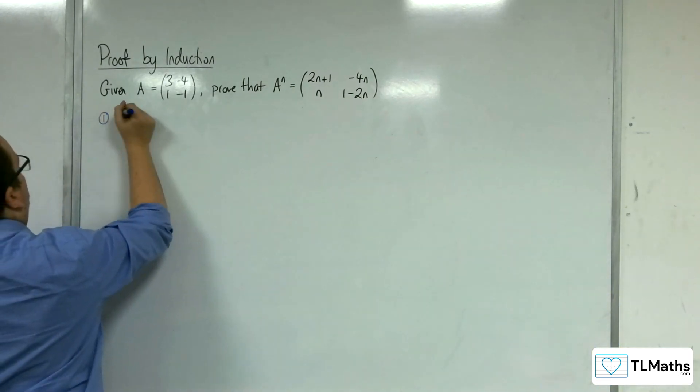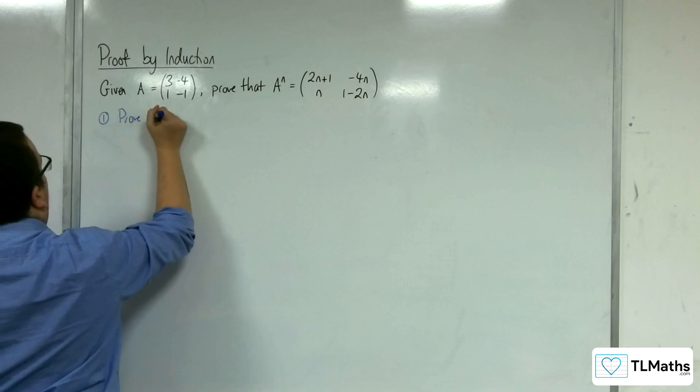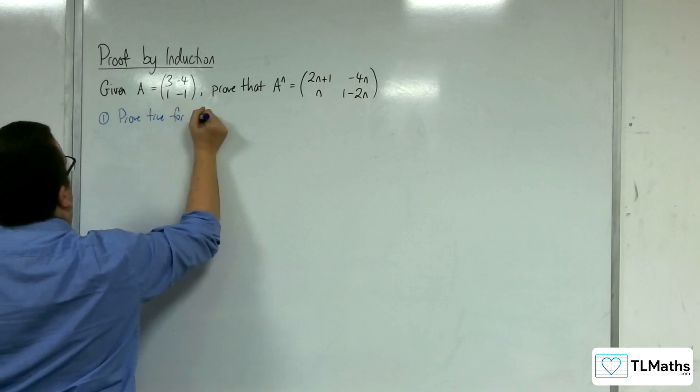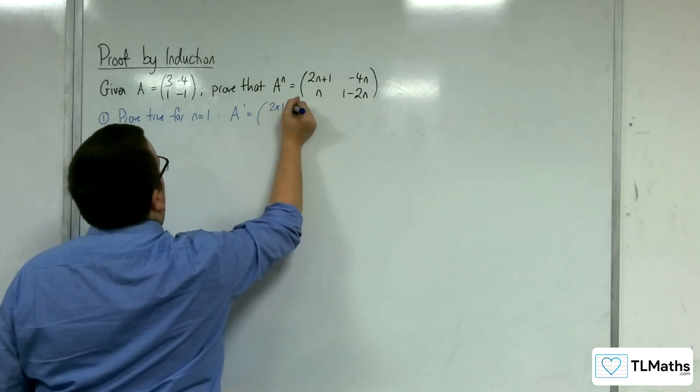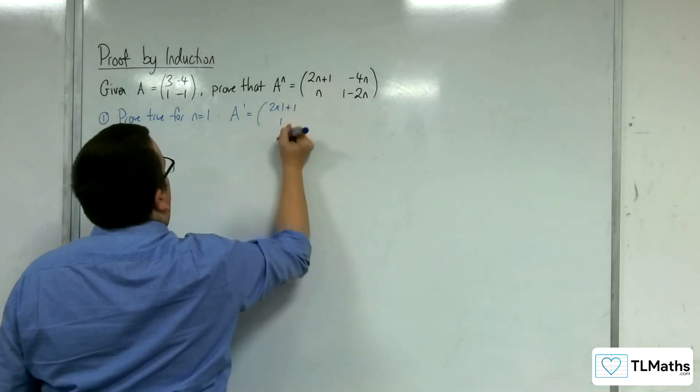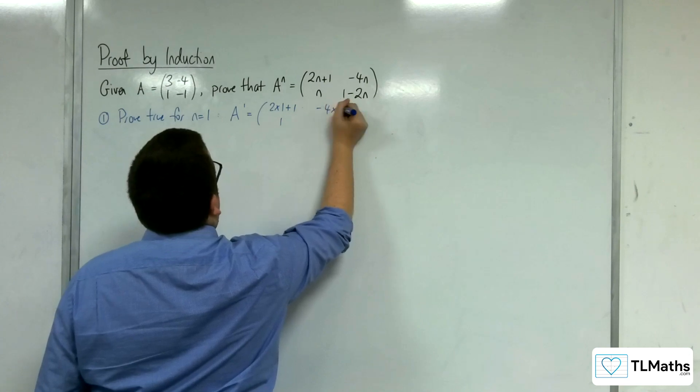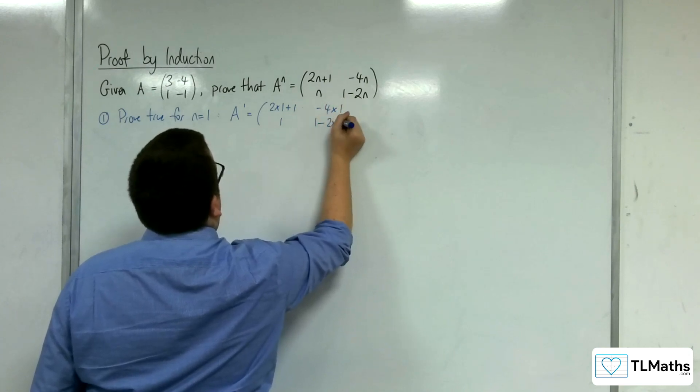So stage 1, prove true for n equals 1. A to the 1 is 2 lots of 1 plus 1, so substituting in n is 1 there, minus 4 lots of 1, and 1 take away 2 lots of 1.